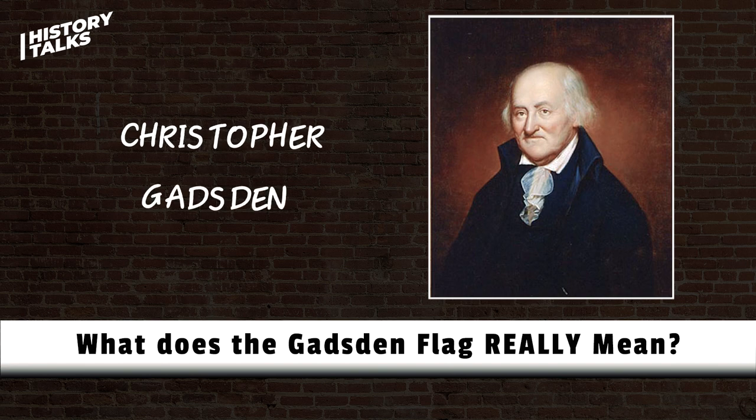The Gadsden Flag is named after its supposed creator, Christopher Gadsden, seen here in his later years. He was a member of the South Carolina Sons of Liberty and the first two Continental Congresses, and he created the flag for the Continental Navy in late 1775. The Gadsden Flag has two elements: the rattlesnake and the phrase, don't tread on me.